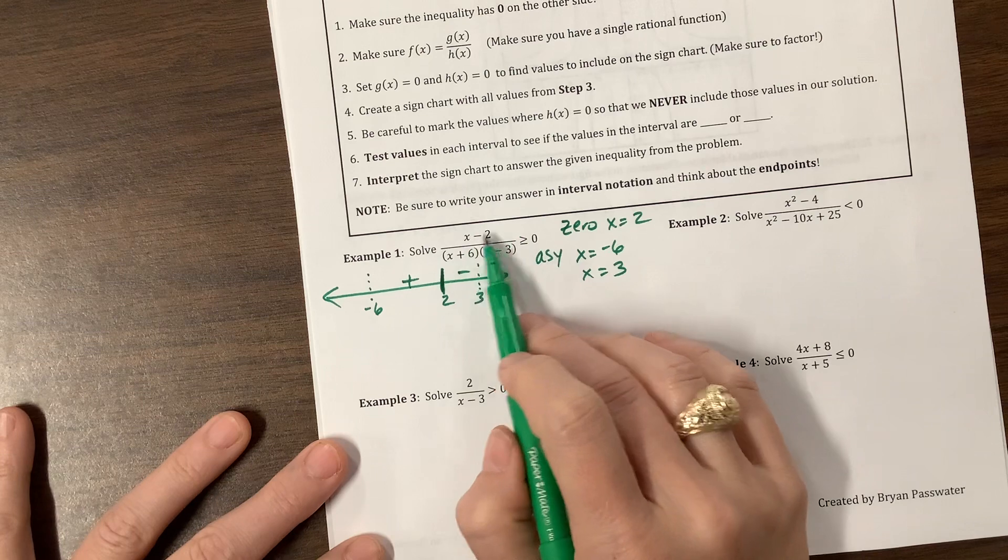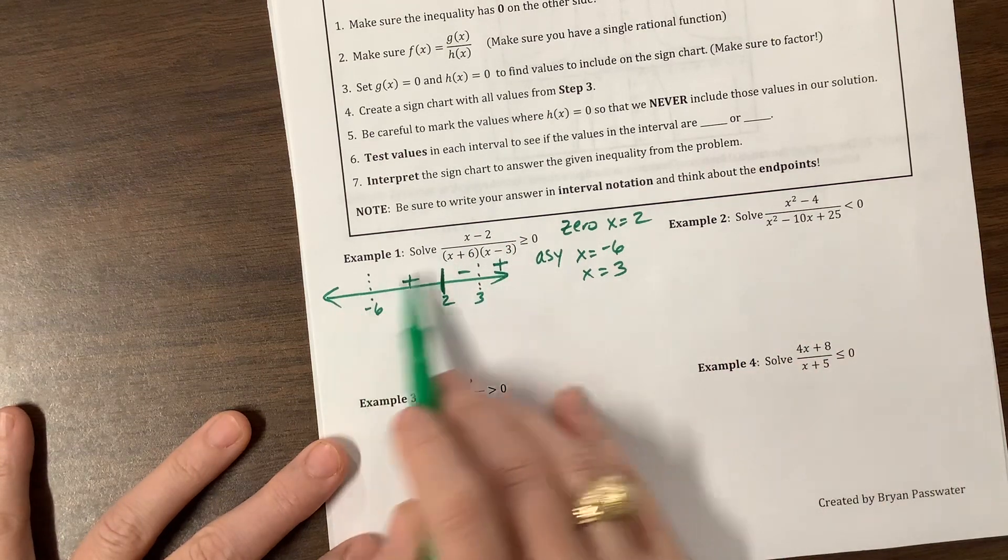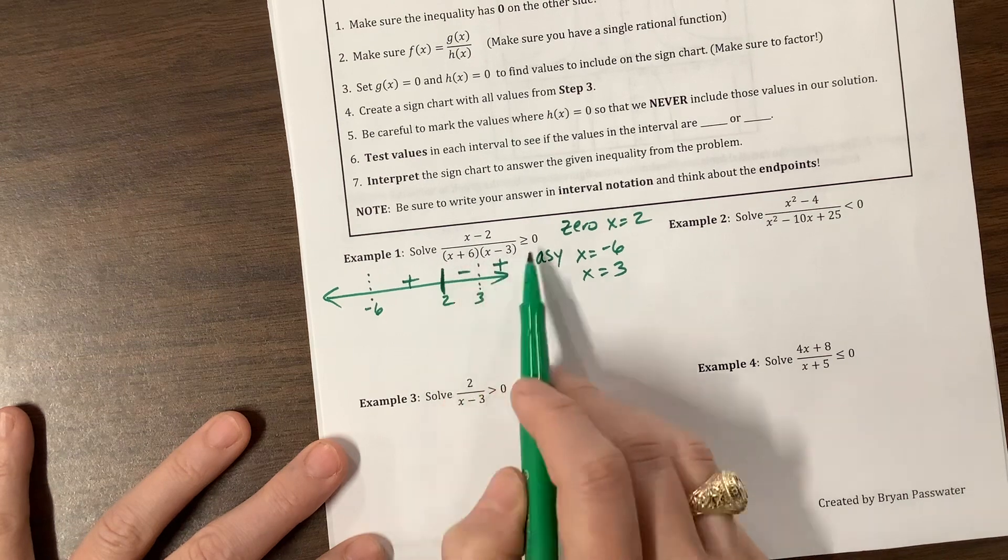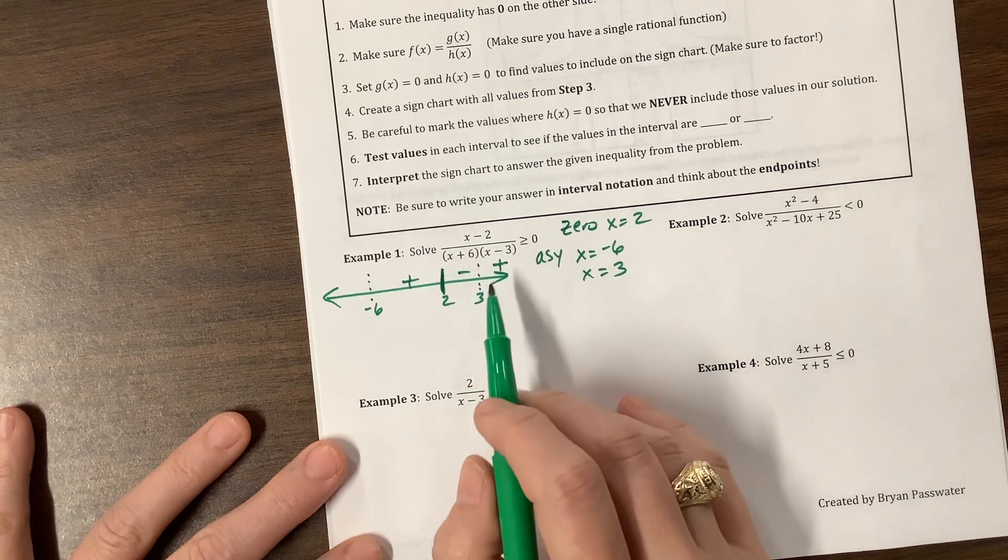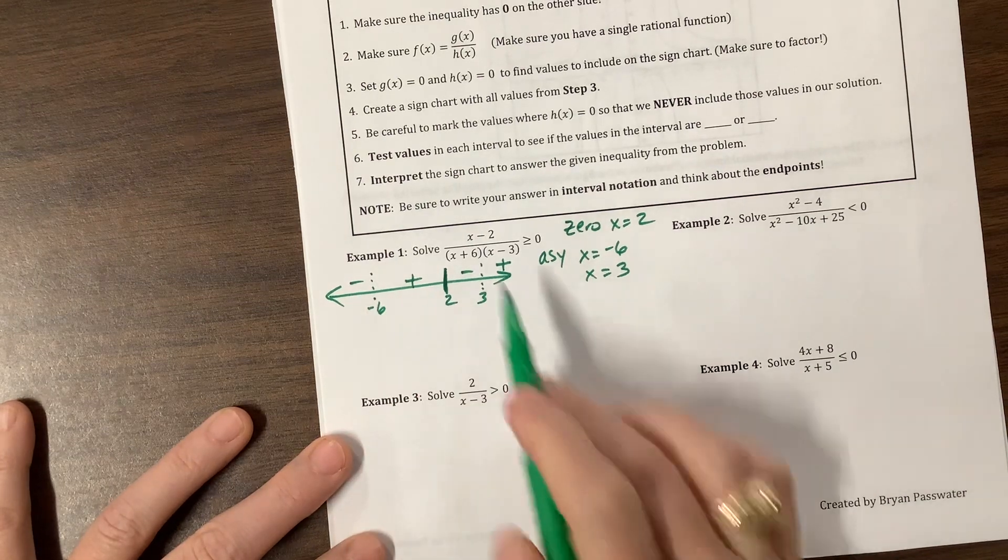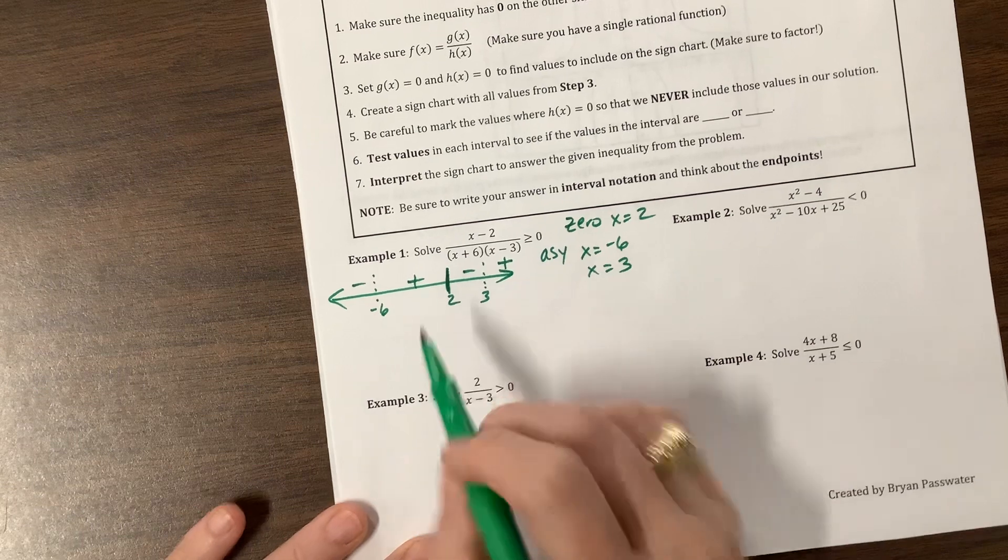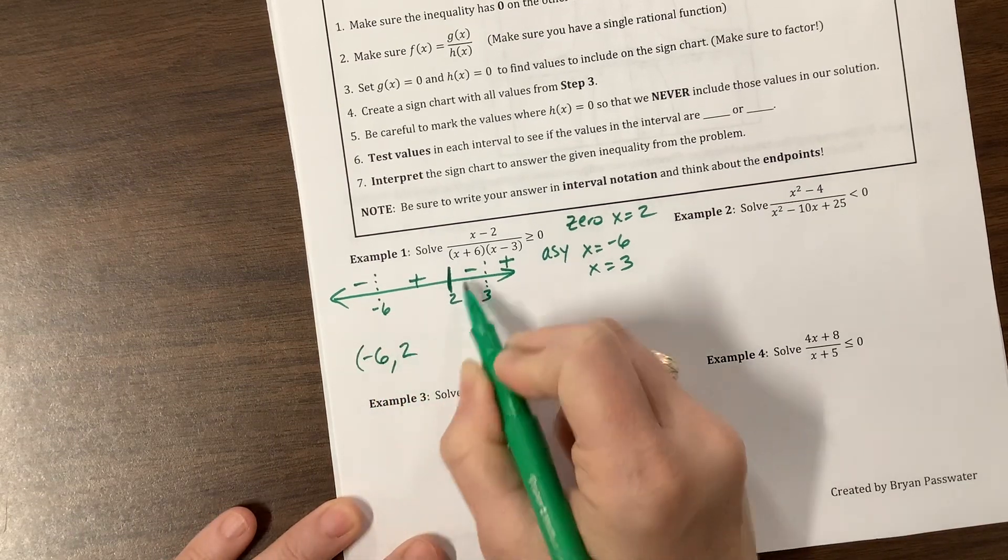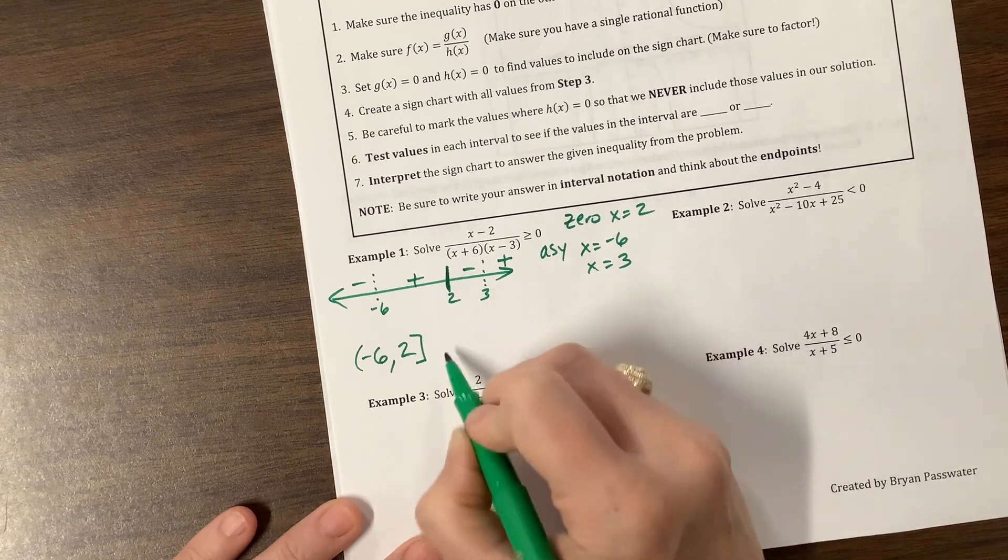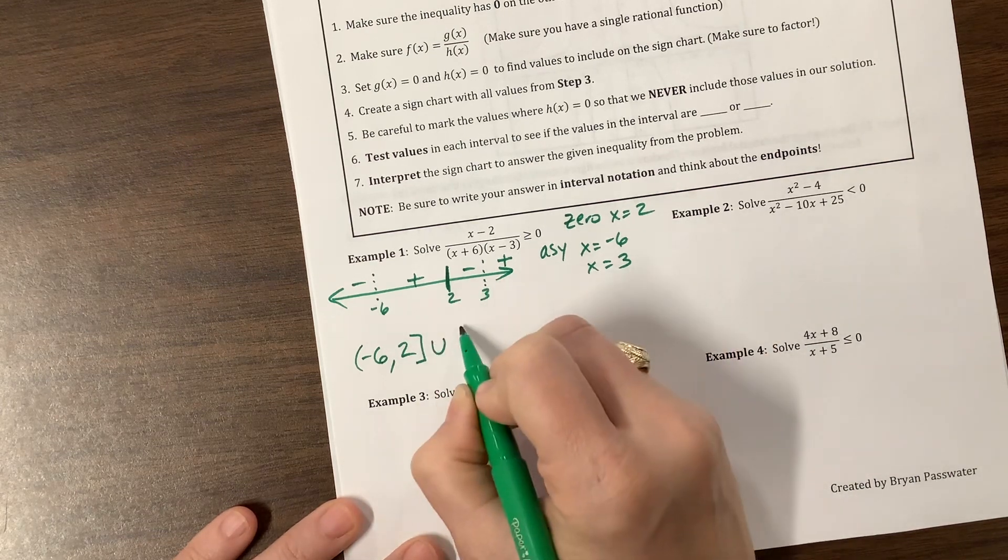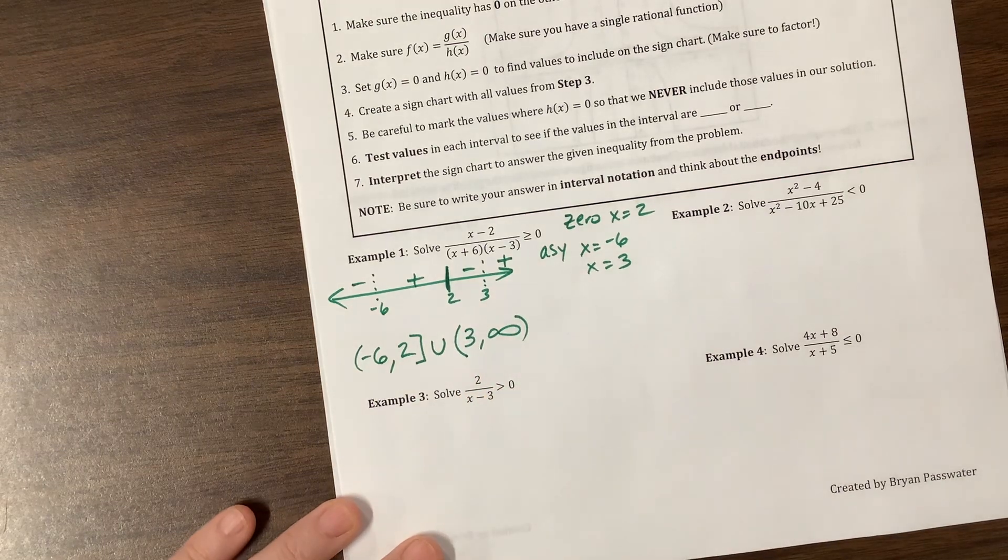Let's try 4. Positive, positive, positive is all going to be positive. Let's try negative 7. So that's a negative, a negative, and a negative. A negative over a negative times a negative is ultimately a negative. Whew, goodness. Okay. So now we want to know when is it greater than or equal to zero. Well, negative 6 to 2, we can equal zero. So let's use a hard bracket where we had a solid line. And then we're going to pick it up again, but we can't equal 3 because it's an asymptote, and we're going to go to infinity.